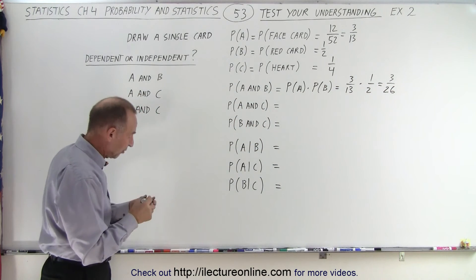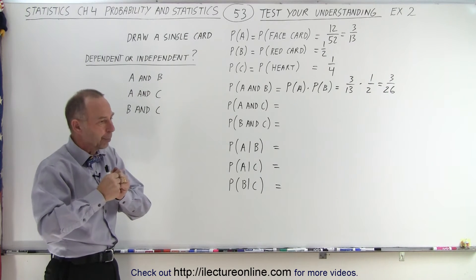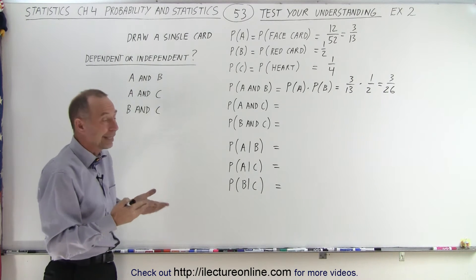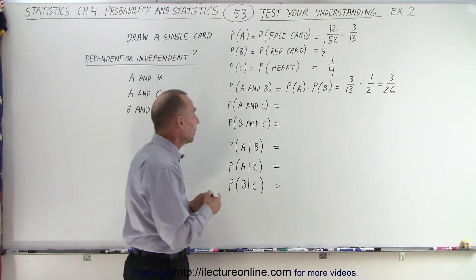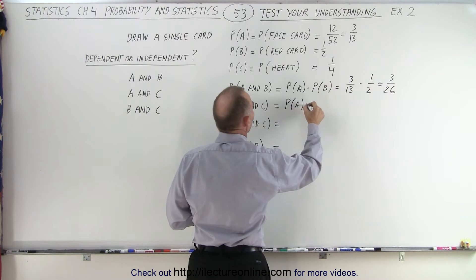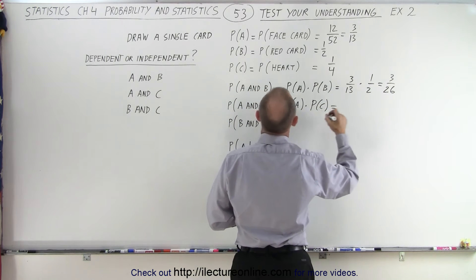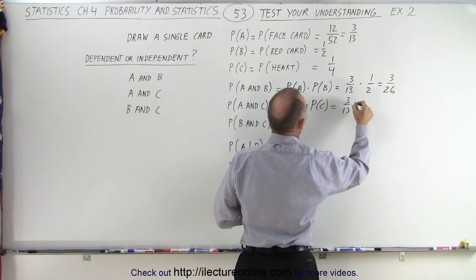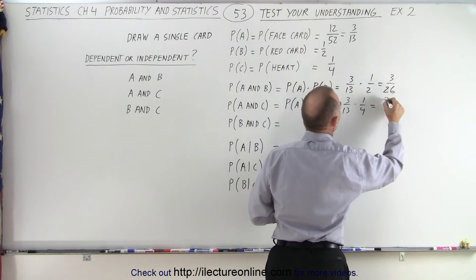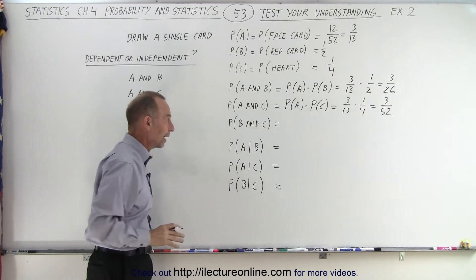How about the probability of A and C? If we know we pulled out a heart card but don't know what type — whether it was a number or a face card — they don't seem to be dependent on one another. So we can say this is equal to the probability of A times the probability of C, which is 3 out of 13 times 1 out of 4, equal to 3 out of 52. We'll confirm this later.